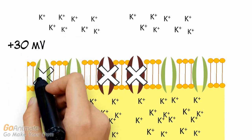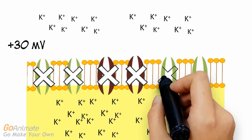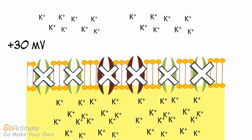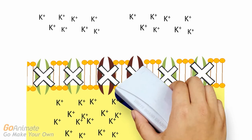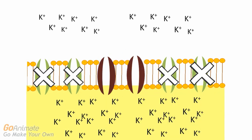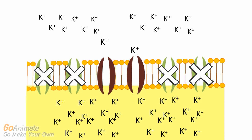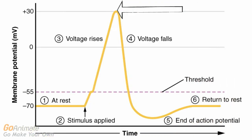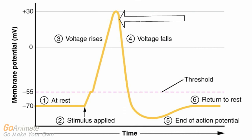At positive 30 millivolts, the sodium channels close. Voltage-gated potassium channels now open, allowing potassium to move out of the cell. The membrane voltage returns to the resting membrane potential of negative 70 millivolts.